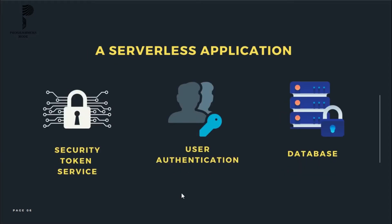Security Token Services, also known as STS, generates temporary AWS credentials for users of the application. These temporary credentials are used by the client application to invoke the AWS API. AWS Cognito is an identity service which is integrated with AWS Lambda, where operations like sign up and sign in can be done, including authentication of users through social identity such as Facebook, Twitter, or using your own identity system.